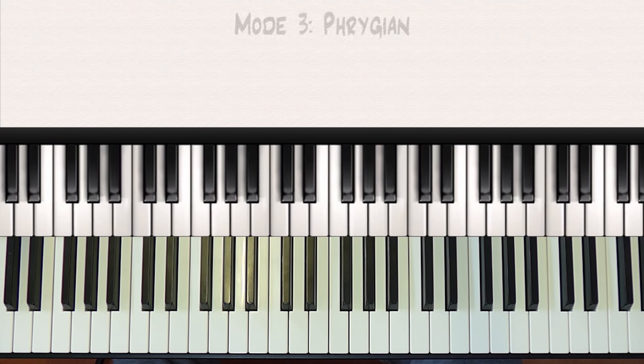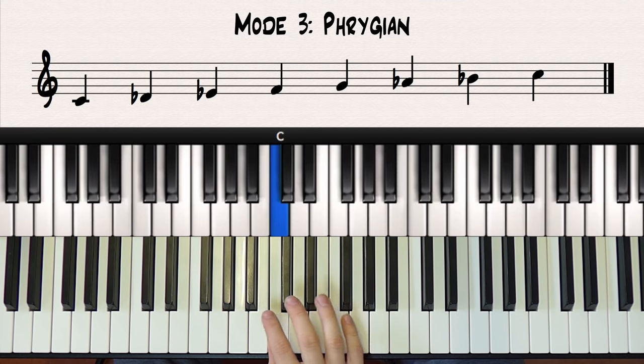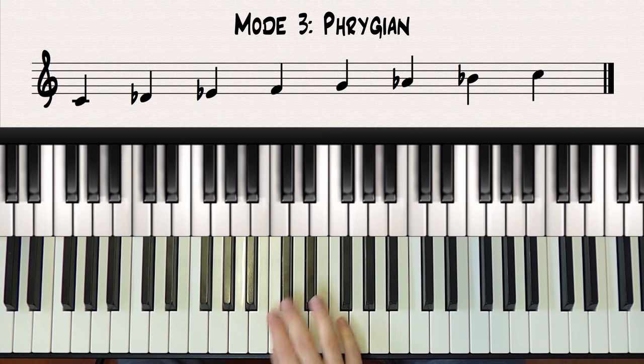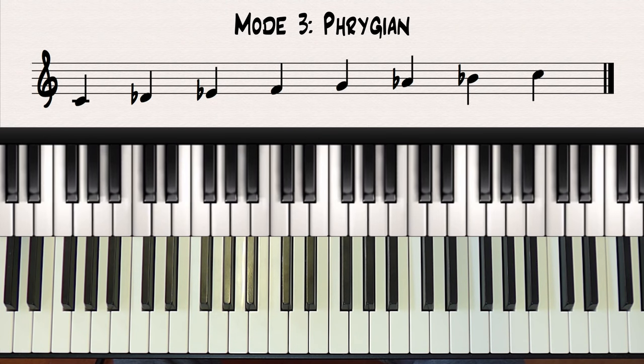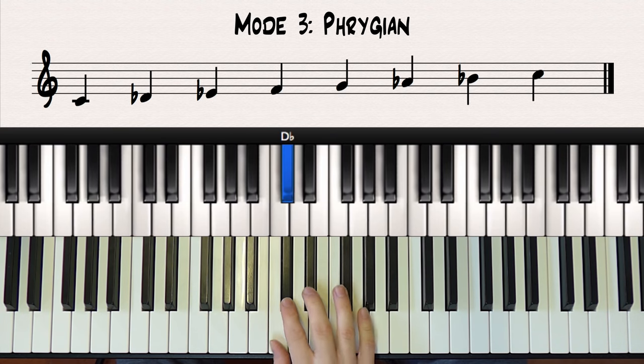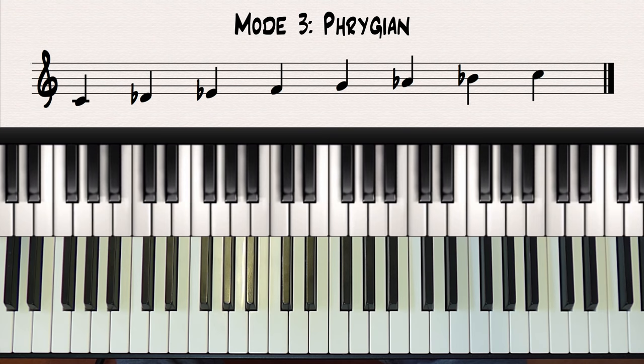The next mode will be C Phrygian. This is the third mode of the major scale and it has that flat nine which gives that very distinctive eastern sound. The Phrygian mode has a flatted second, third, sixth and seventh. Or we can ask ourselves what major scale has the note C as its third degree, because it's mode three, and the answer is A flat major. So if we play A flat major starting and ending on C this also gives us C Phrygian.